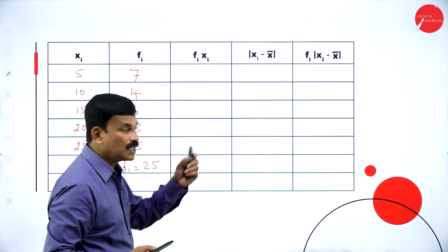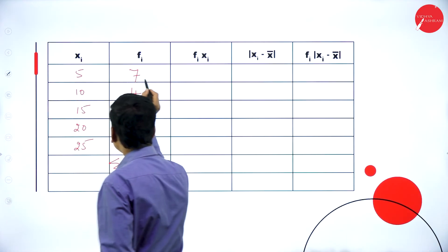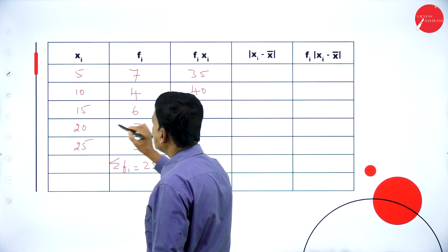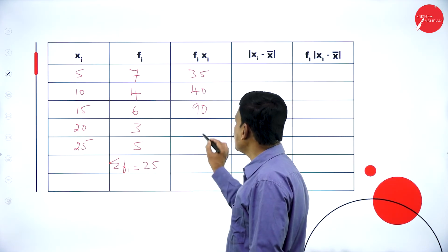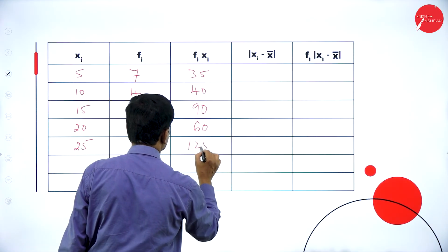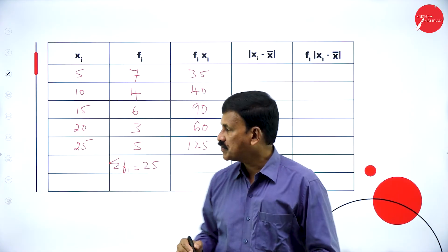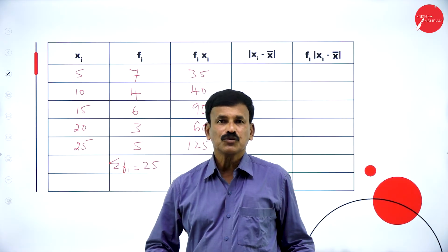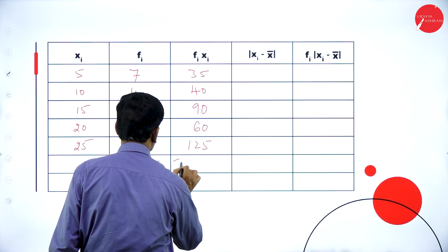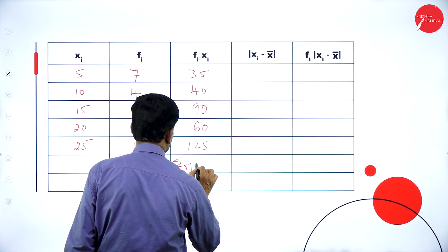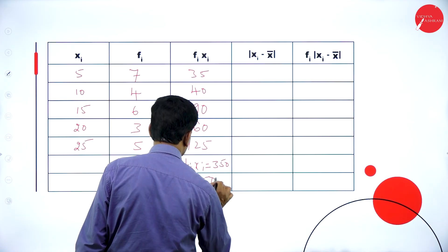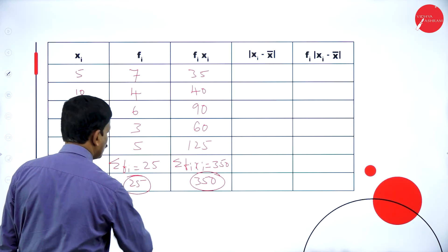Now multiply fi and xi: 5 into 7 is 35, 10 into 4 is 40, 15 into 6 is 90, 20 into 3 is 60, 25 into 5 is 125. Adding: 35 plus 40 plus 90 plus 60 plus 125 gives sigma fi*xi equal to 350.